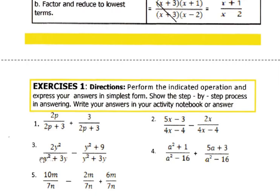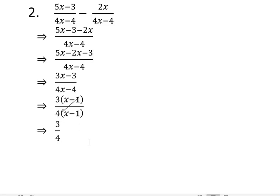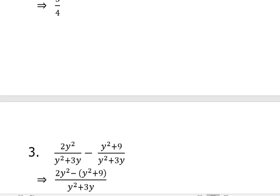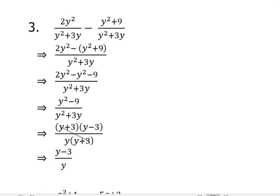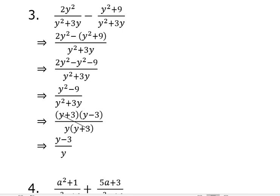For number 3, we have 2y squared all over y squared plus 3y minus y squared plus 9 all over y squared plus 3y. We have the solution for number 3.